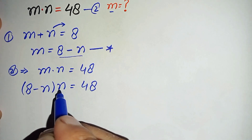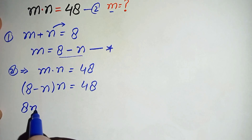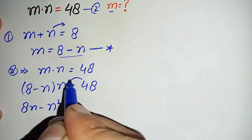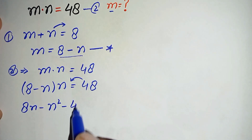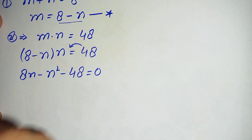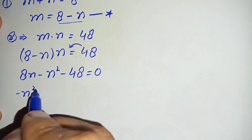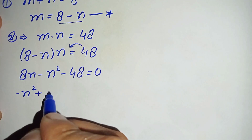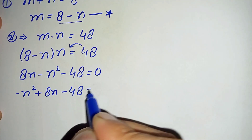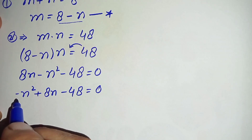Multiplying n inside the brackets: 8 times n is 8n, minus n times n is n squared. Moving 48 to the left hand side gives minus n squared plus 8n minus 48 equals 0, rearranged in order of degree.